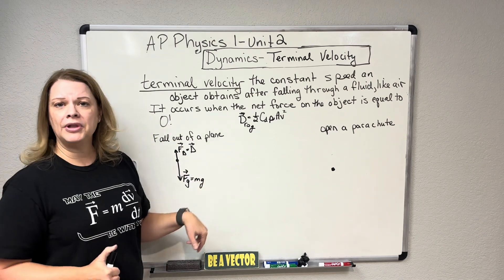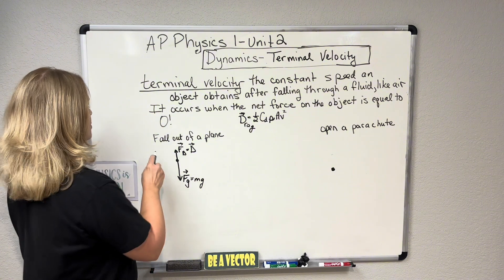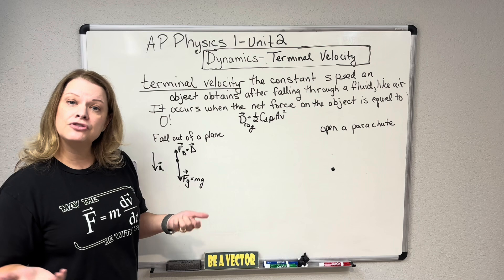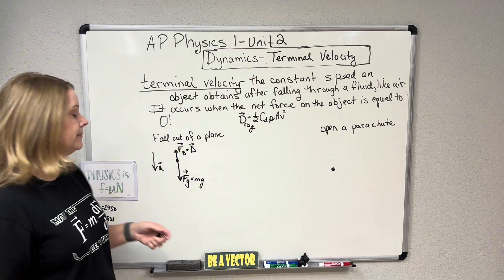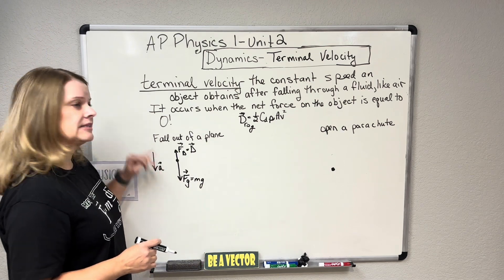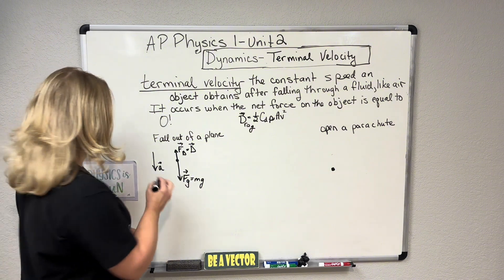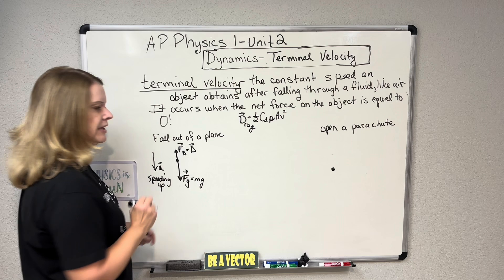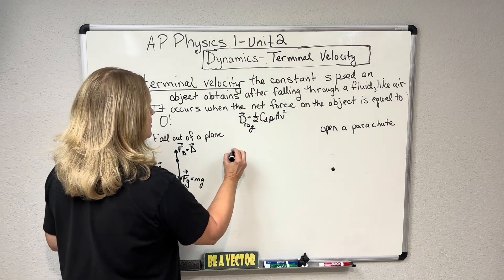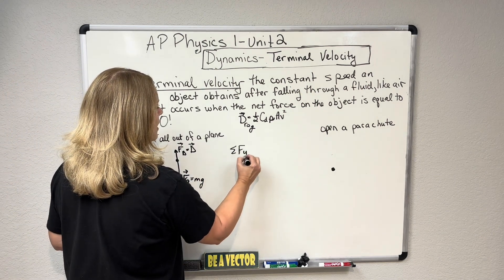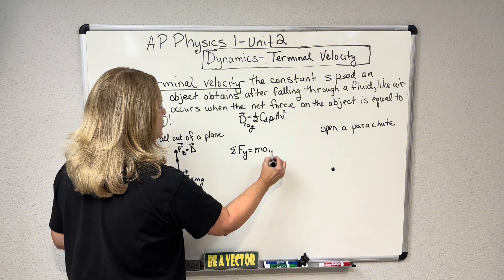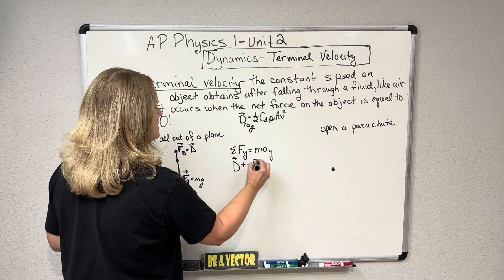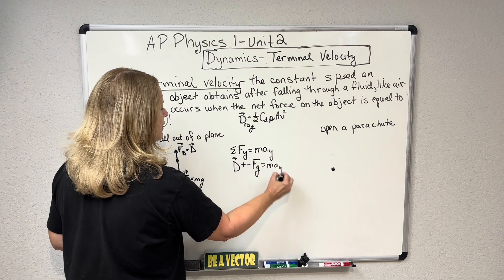Okay. He first falls out of a plane. He is headed down, of course, and he is accelerating down because we have acceleration due to gravity, negative 9.81. But as he's accelerating down, he is speeding up, right? He's speeding up because he's accelerating downward. So if I were to do this sum of the forces in the Y equal mass times acceleration in the Y, we have that drag force up, we have his force due to gravity down, and it's going to equal his acceleration in the Y.